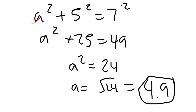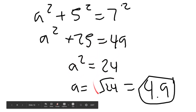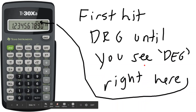Let's check our answer with the Pythagorean theorem. a² + 5² = 7², so a² + 25 = 49. Subtract 25 from both sides: a equals the square root of 24, which is about 4.9. This confirms our answer.